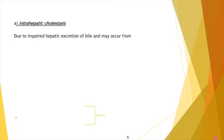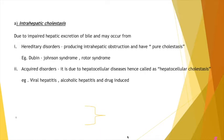Moving on to the types of cholestasis, the first one is intrahepatic cholestasis. As the name suggests, it is an obstruction to bile outflow happening within the liver — specifically within the small bile ducts or canaliculi within the liver. It can be due to many reasons, one of the main ones being hereditary disorders producing intrahepatic obstruction. Since it is an inborn disorder, we can call it pure cholestasis.